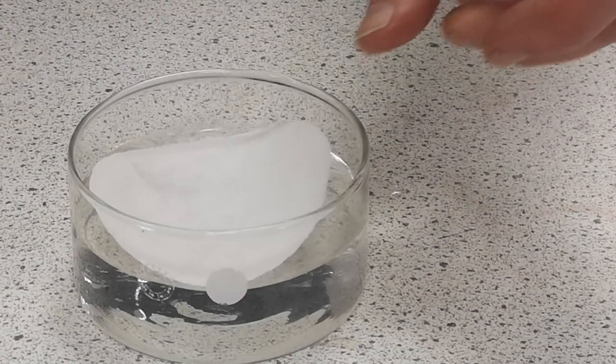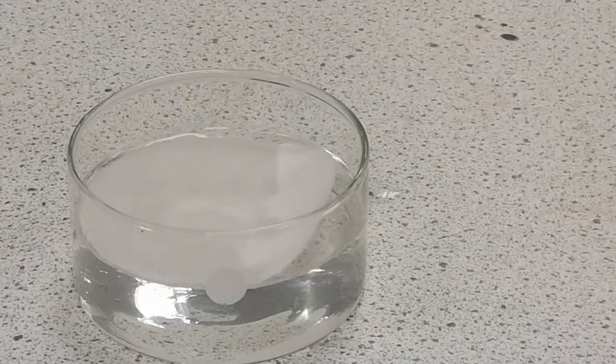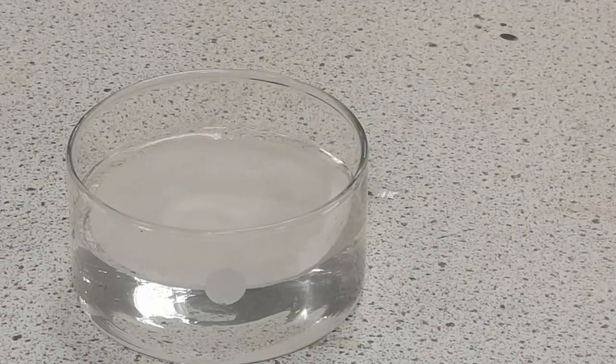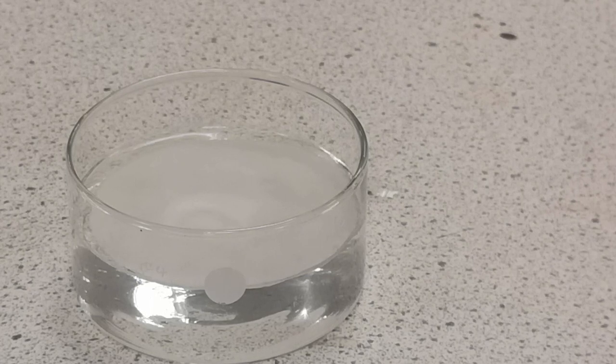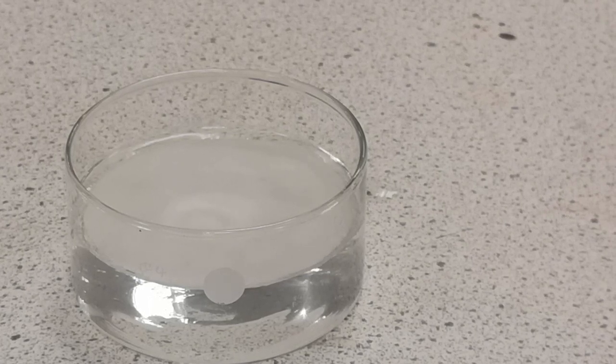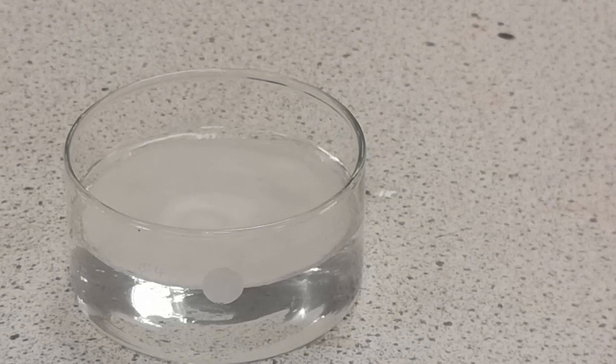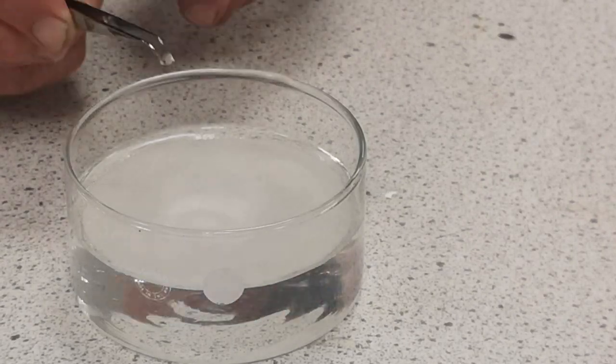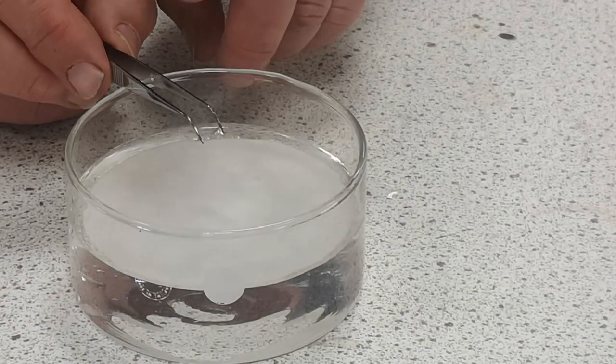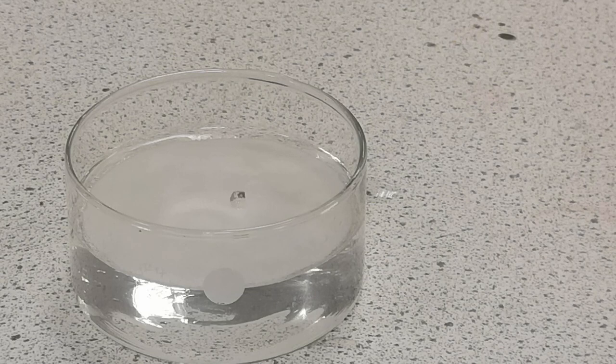However, if you place a piece of filter paper on the surface of the water and put the piece of sodium on top of this, the reaction proceeds a little more slowly at first, but you can soon see it catching fire and burning with a brilliant orange flame, characteristic of sodium.